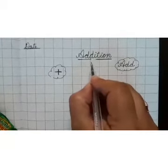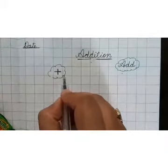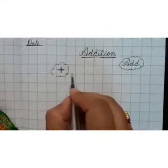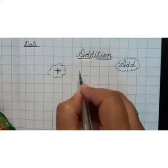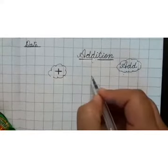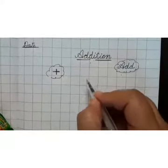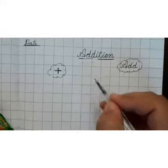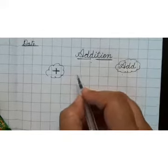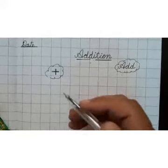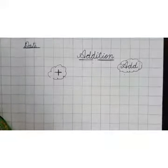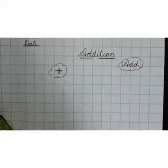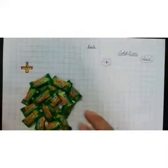Now what is the meaning of addition? Addition is to add something - plus karna. Something you have, and you add something more to it, and the result will be in the increasing form. You will get the result in increasing form. Like if you are having - see, your mouth will water - what I have kept here? I have kept some toffees.